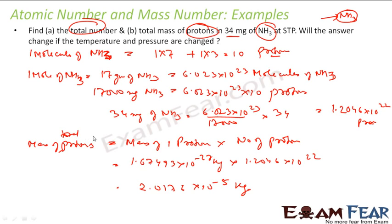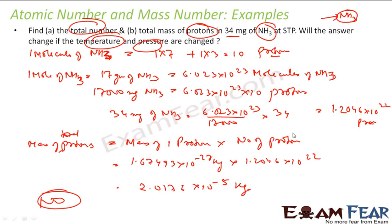Now, will the value change if you change temperature and pressure? No — because no matter what temperature and pressure you consider, the number of protons is the same and the mass of a proton is the same. The answer will not change.